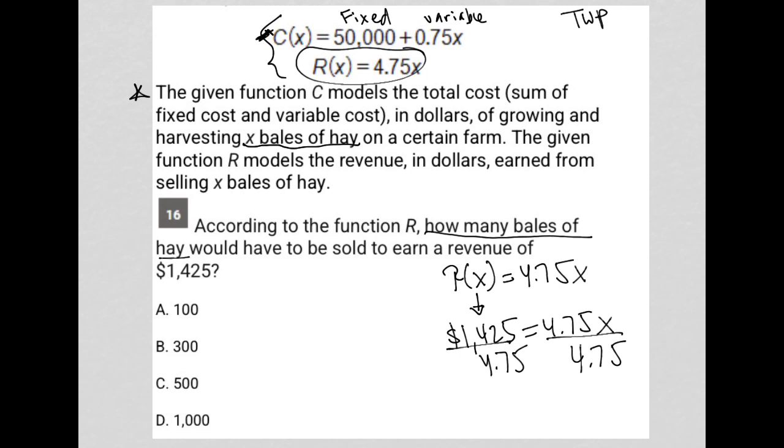Then I just go straight to my calculator and figure out what is $1,425 divided by 4.75. And what I get is that x is equal to 300, and therefore the correct answer here is choice B.